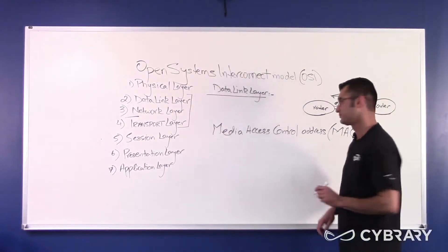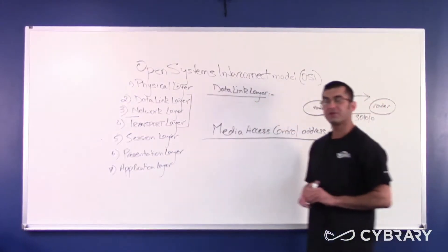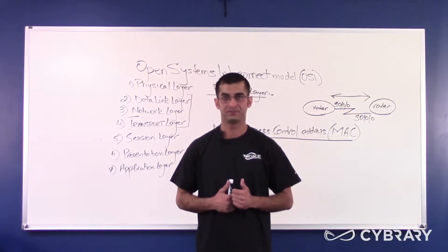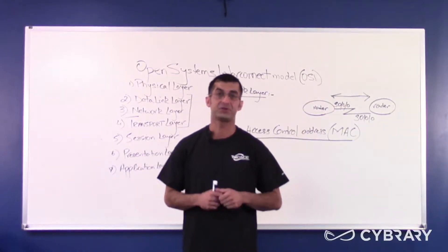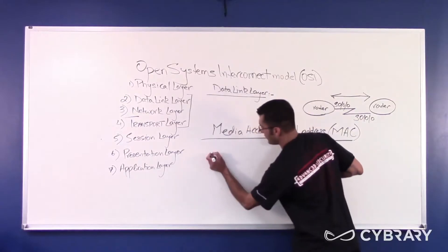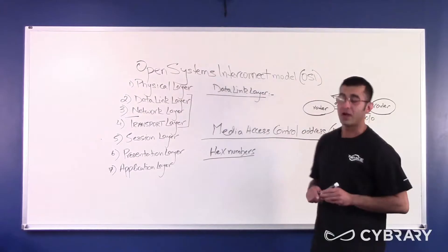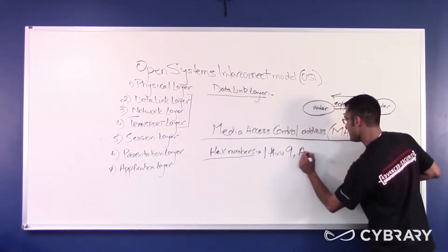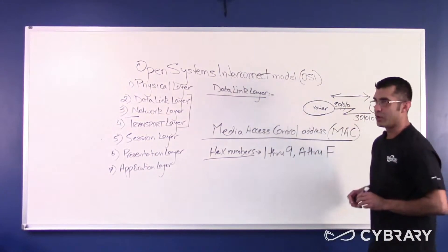What does a MAC address look like? A MAC address is 48 bits in length and it's written in hexadecimal. Now I'm not going to assume that people here listening to this lecture know what hexadecimal numbers are.